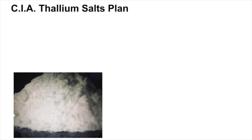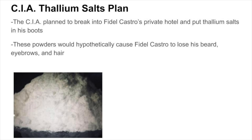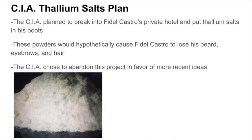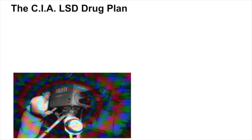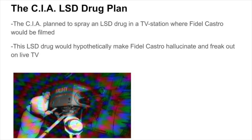Before plotting to kill Fidel Castro, CIA agents planned a more covert plan to take Castro out of power by undermining his natural charm. This started with a plan to break into Castro's private hotel and put thallium salts in his boots. This powder would hypothetically cause Castro to lose his beard, eyebrows, and hair. However, before the CIA enacted this mission, they chose to abandon the project in favor of more recent ideas. The CIA's next attempt to undermine Fidel Castro's leadership came when they planned to spray an LSD drug in a TV station where Castro would be filmed, to make Castro hallucinate and freak out on live TV. The CIA also rejected this plan.